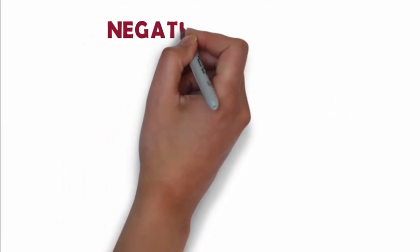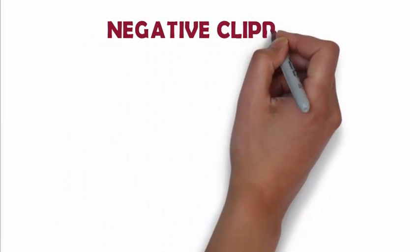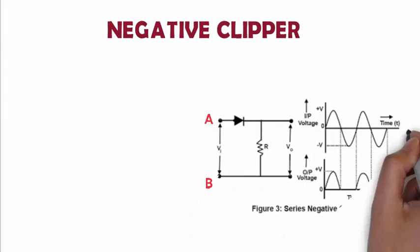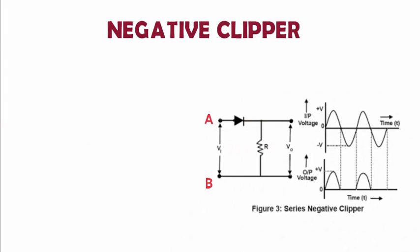Coming on to the negative clippers, we can say that the direction of the diode is reversed compared to positive clipper circuit. During the positive half of the voltage, terminal A is positive with respect to B and the diode is forward biased. The waveform is made as shown in the figure. When switched to the negative half of the cycle, the polarity is reversed and terminal B is positive with respect to A, therefore the diode is reverse biased and acts as an open switch.